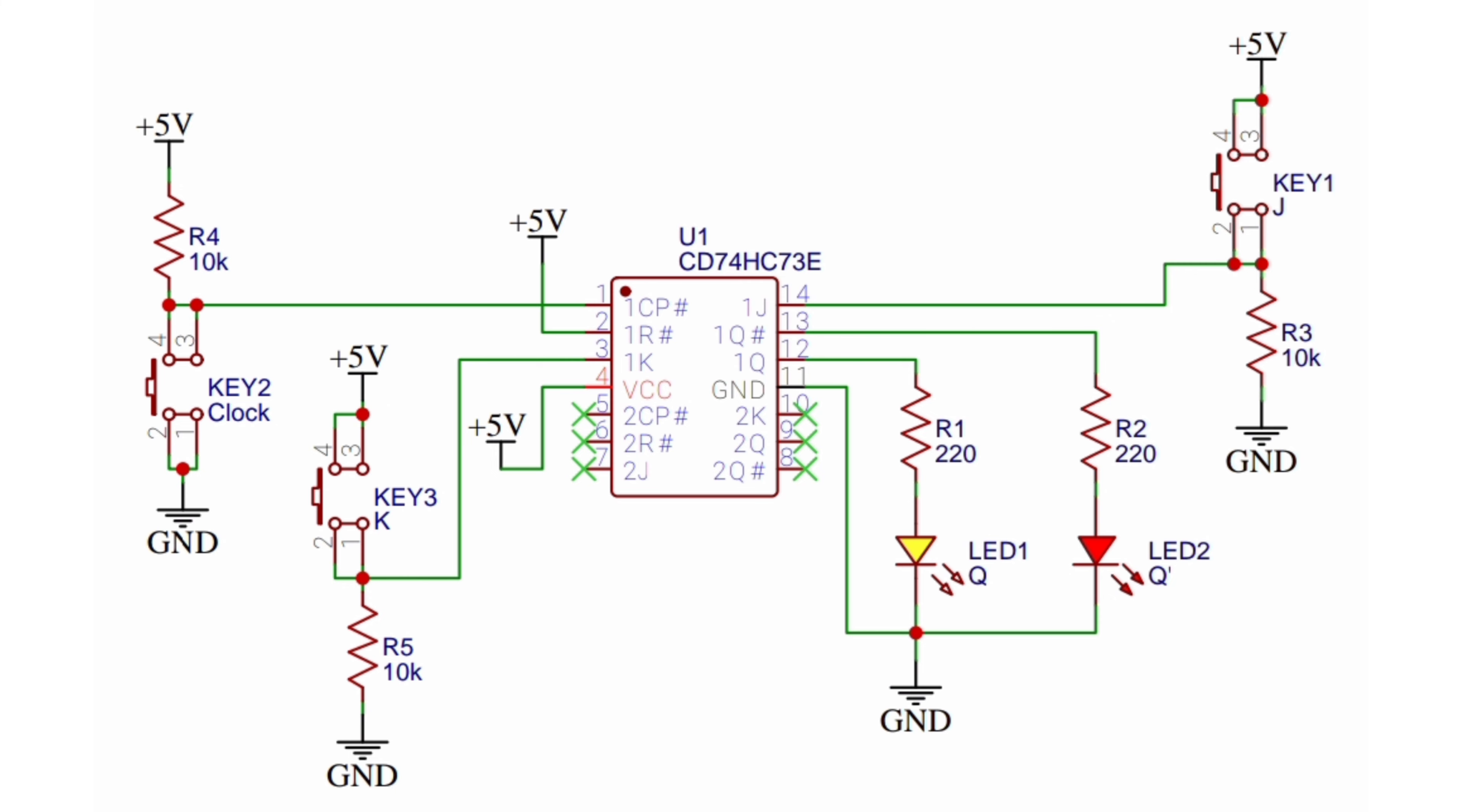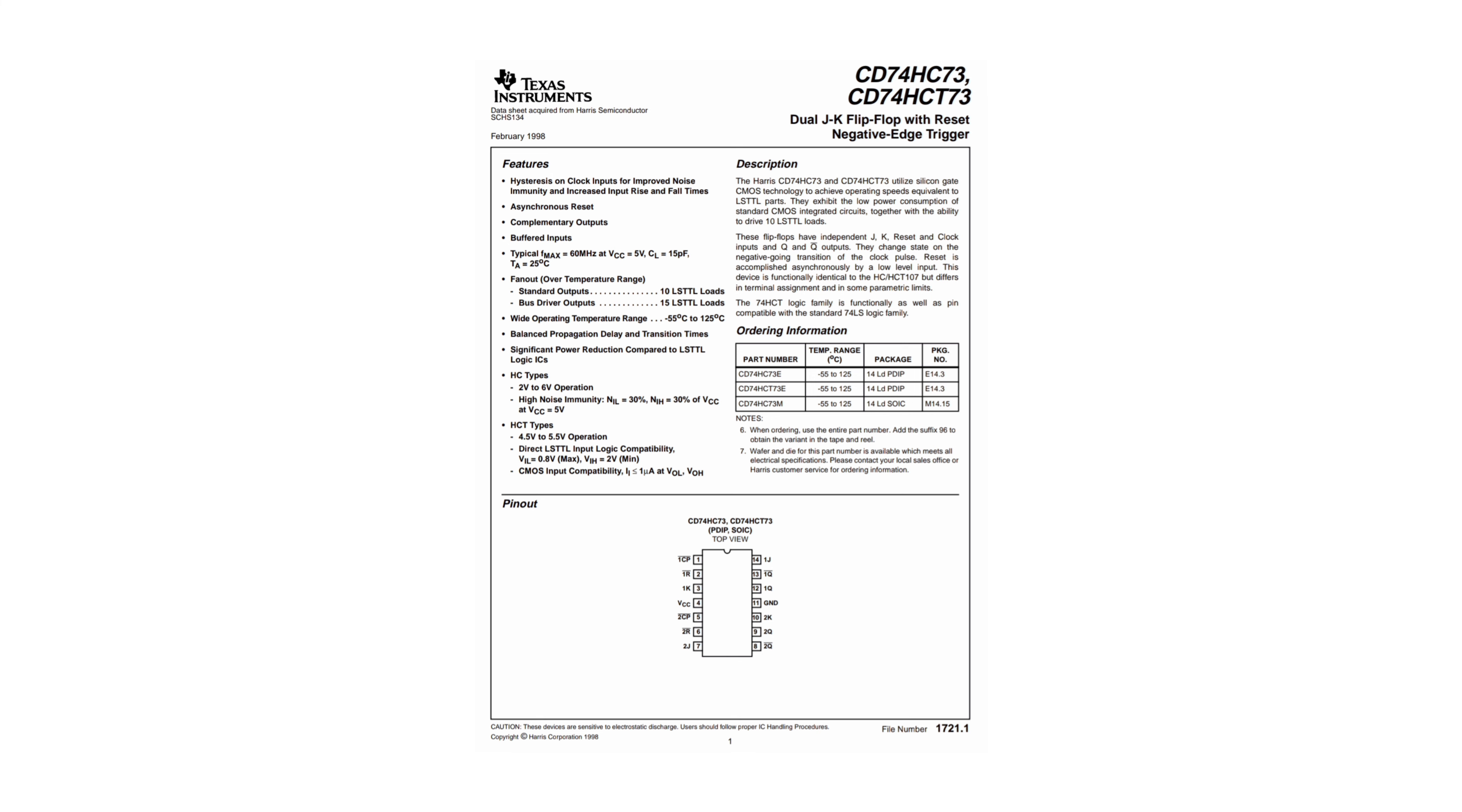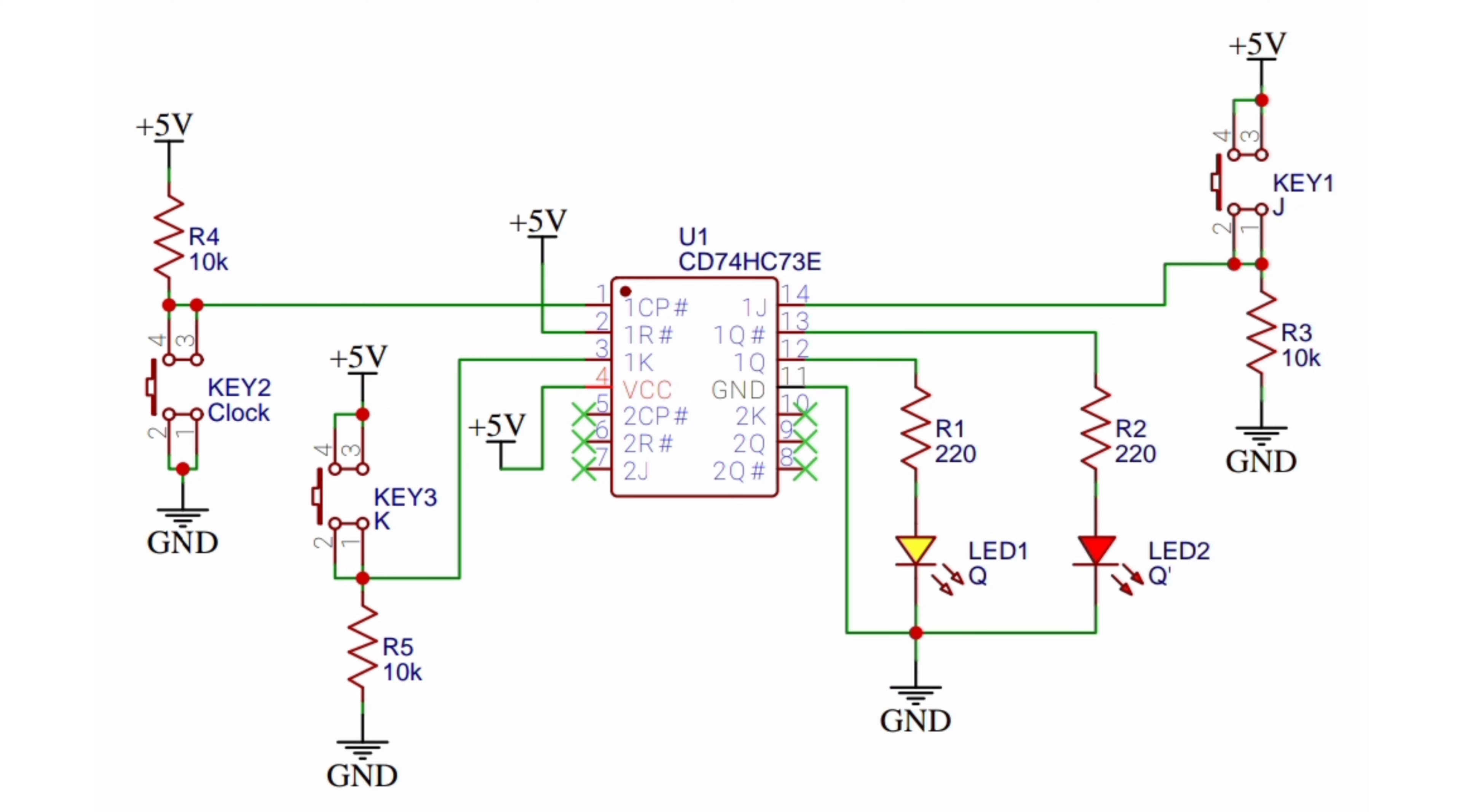We use the pull-up method on the clock input because according to the datasheet of the CD74HC73, this is a negative edge triggered IC. Therefore we need to apply a negative clock pulse to the clock input of both JK flip-flops.